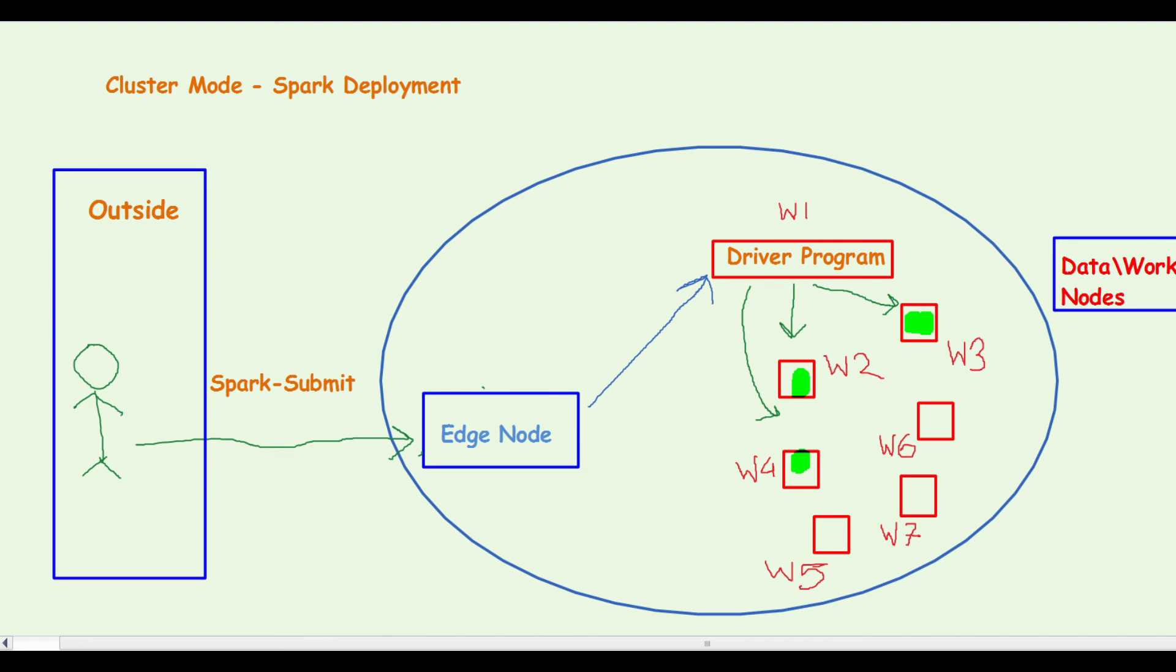To simplify, in cluster mode the driver program runs in one of the worker nodes or data nodes itself, based on the availability of resources. This way, the driver programs are initiated in different worker nodes based on the availability of resources, and Spark is smart enough to understand what worker node to use to start a driver program.